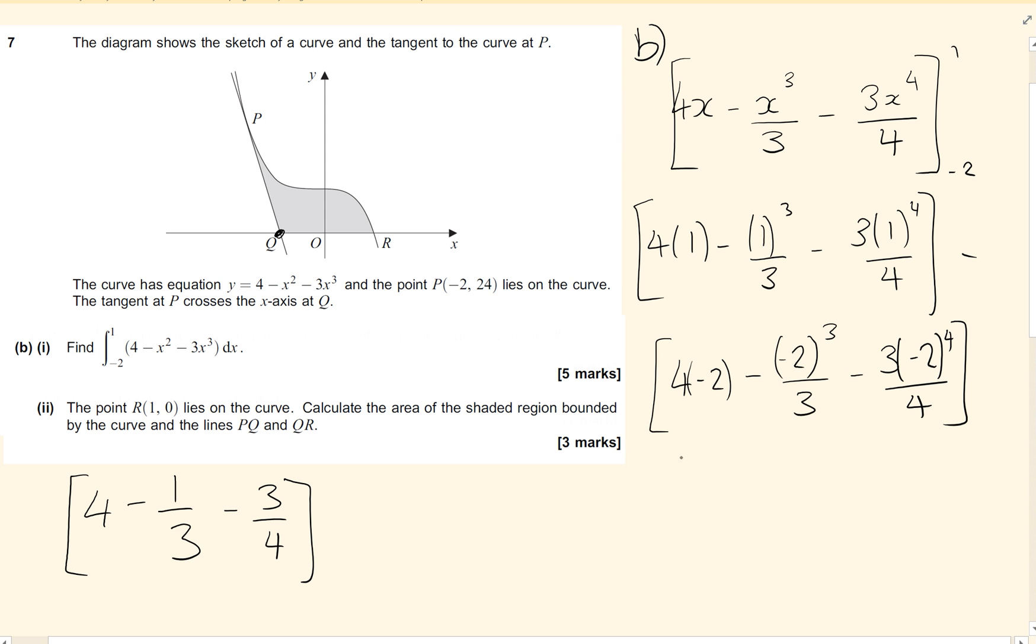And the second part minus, we've got minus 8 there. Minus 2 cubed is going to be minus 8, so minus 8 over 3. Minus 2 to the 4 is positive 16. Positive 16 times by 3 comes to positive 48, so I've got minus 48 over 4.